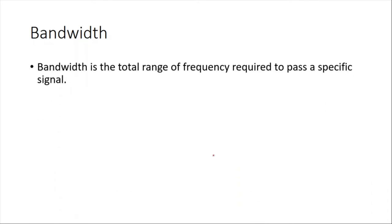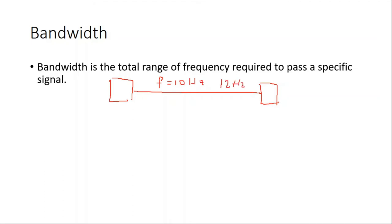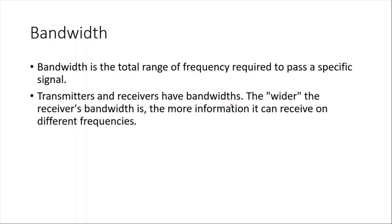Bandwidth is the total range of frequencies required to pass a specific signal. If you can only transmit at, for example, 10 hertz, 12 hertz, and 24 hertz — just three frequencies — your bandwidth is very small. But if you can transmit frequencies from 10 hertz up to 10,000 hertz, your bandwidth is very high, meaning you can transmit signals with very different frequencies. Transmitters and receivers have bandwidths; the wider the receiver's bandwidth, the more information it can receive on different frequencies.